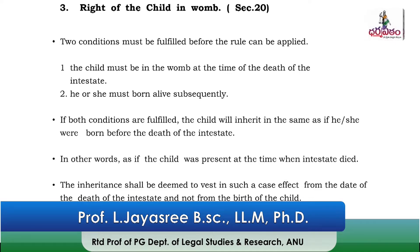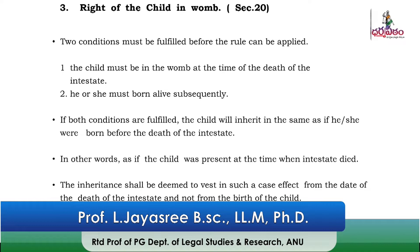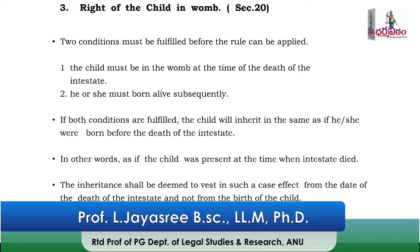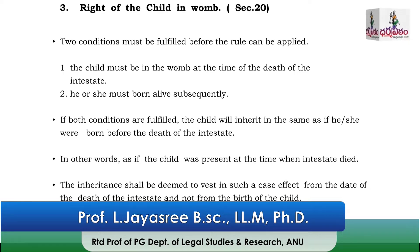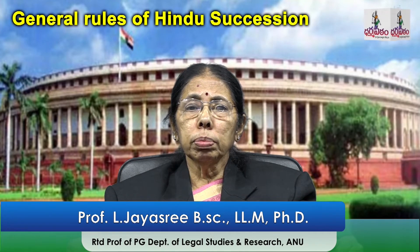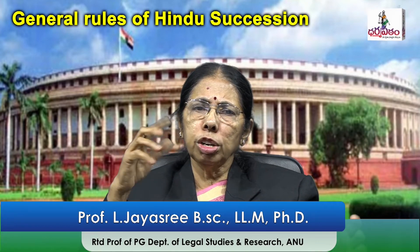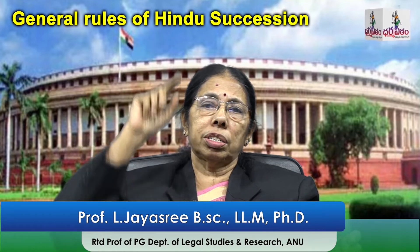If these two conditions are fulfilled — child in the womb and born subsequently alive — the child will inherit the property of the intestate in the same way as if he or she was born before the death of the intestate. The child was not born at the time of the death of the intestate, but the law presumes that the child was born before the death of the intestate.